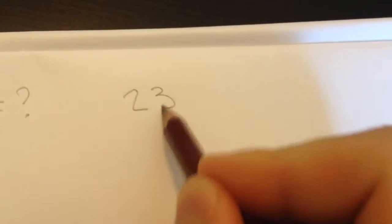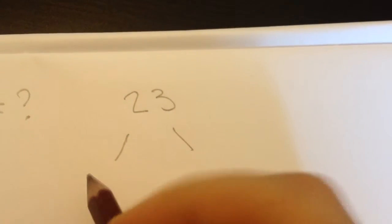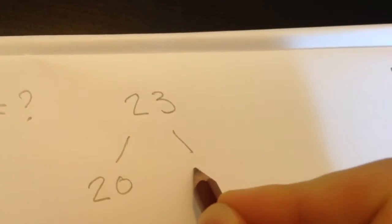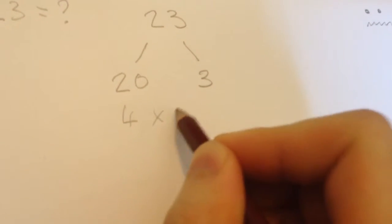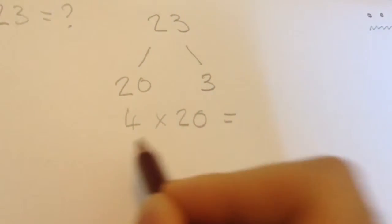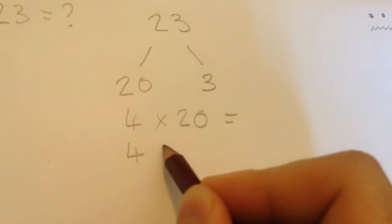The first would be to break 23 down into tens and units. You can then multiply both numbers by 4 and add your answers together to get the answer for the original sum.